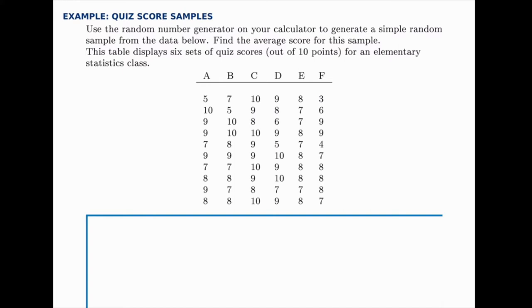We're going to select a simple random sample of 12 of these from this group and we'll use the calculator to do this. Let's go to the calculator and we'll use the random number generator there to pull out random values.